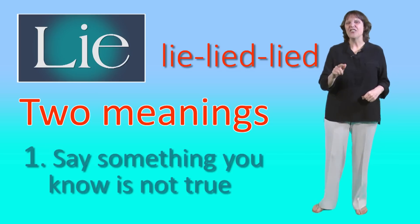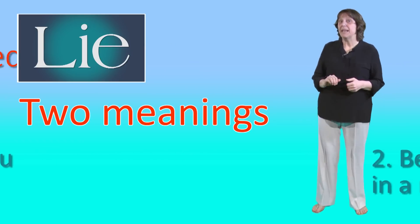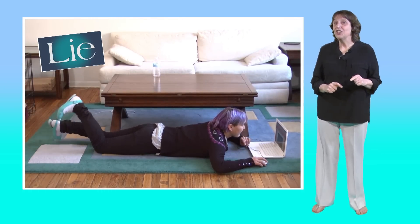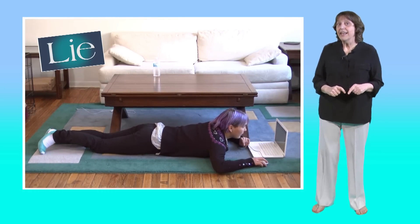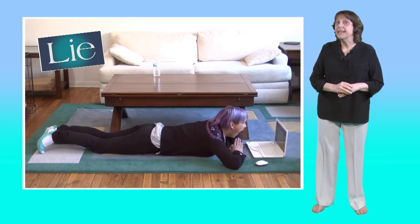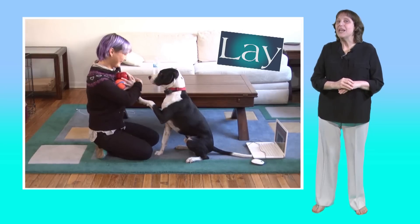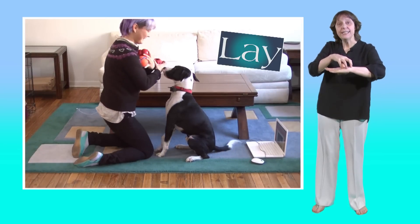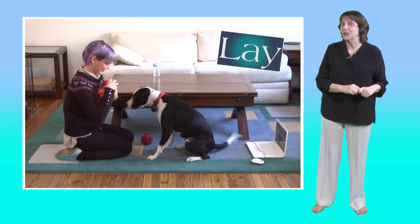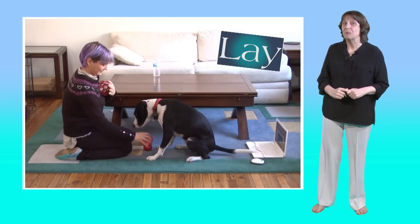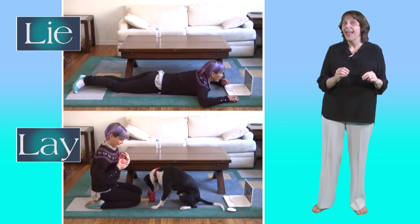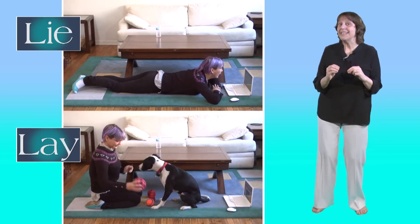Easy, huh? OK, let's forget that meaning and look at another one. This is Ksenia and she's lying down here — she's in a horizontal or resting position. This meaning is similar to the verb lay. But when we lay something, we put it down. Here Ksenia is laying down Carter's toys, placing them on the floor. So lie means be horizontal and lay means place something down.